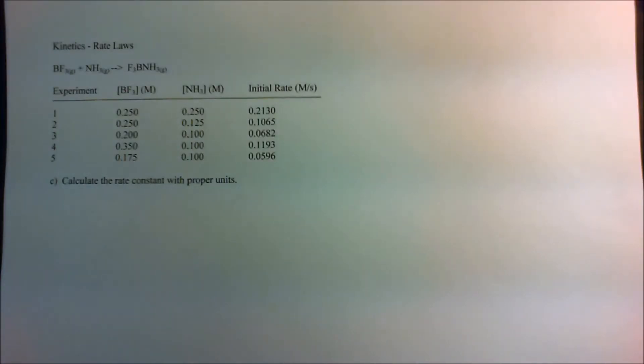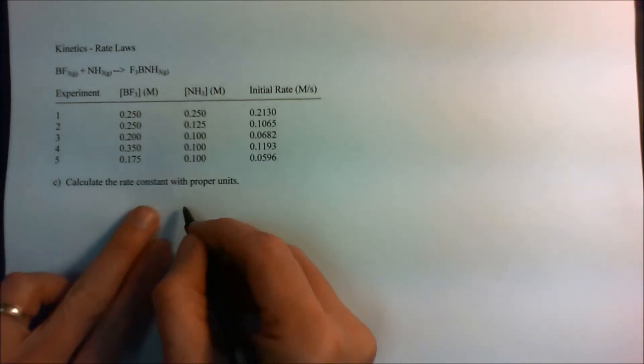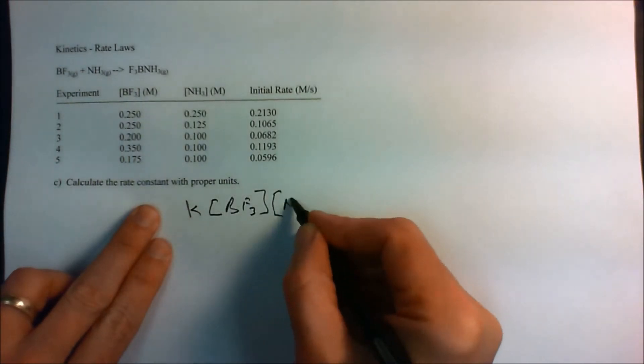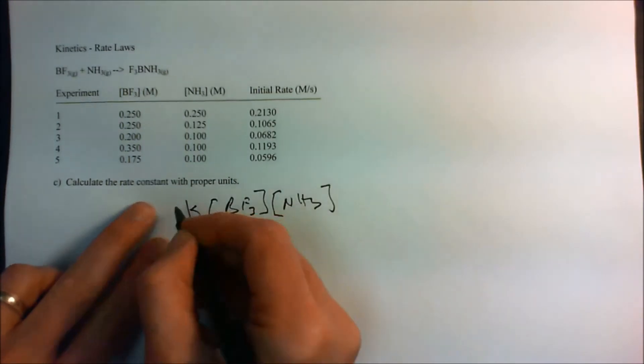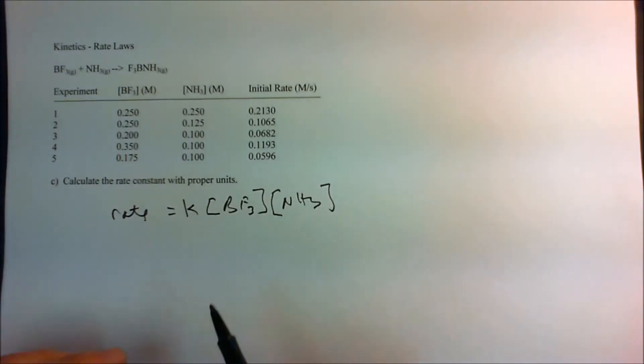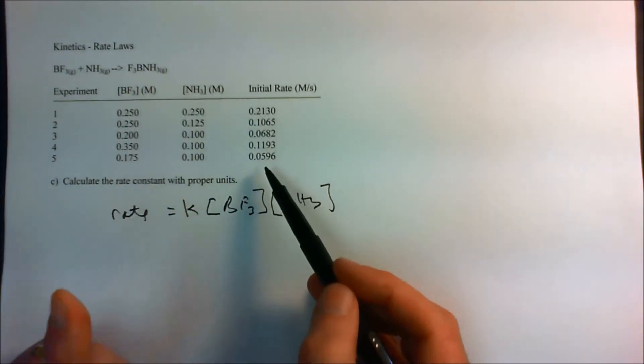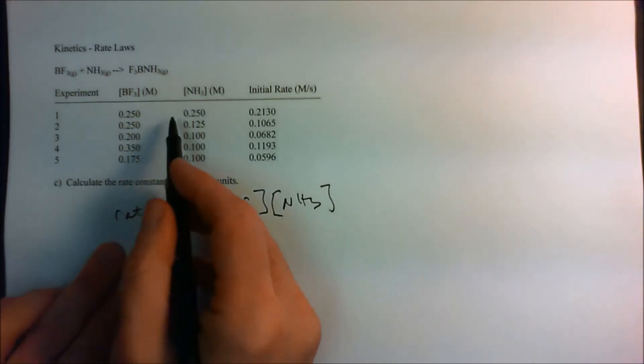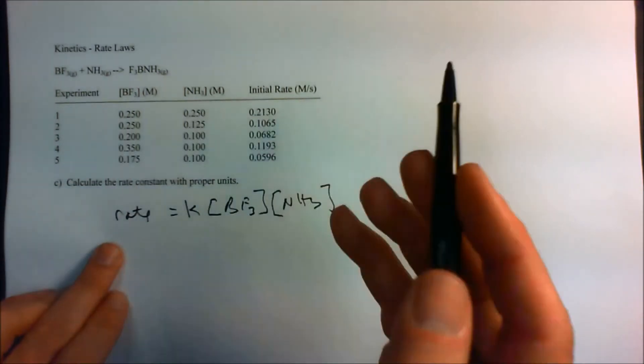Finally, we want to calculate the rate constant with proper units. Now there's two ways you can do this. We know it's second order overall, and we know it's first order with respect to each one. You can either take a pair and solve for K, a pair of concentrations. Take any one of these rates, any pair of these concentrations, and just solve for K. And strictly speaking, you could solve for K for each one. It should be the same K, but you've got five of them. You can get a better K just by simply averaging, or you can graph this. I'm just going to go ahead and just take a pair of these guys, and let's just take the first two here.